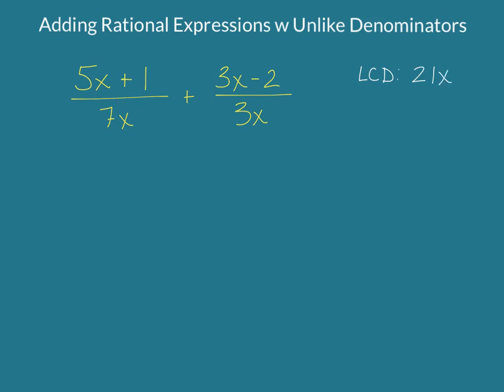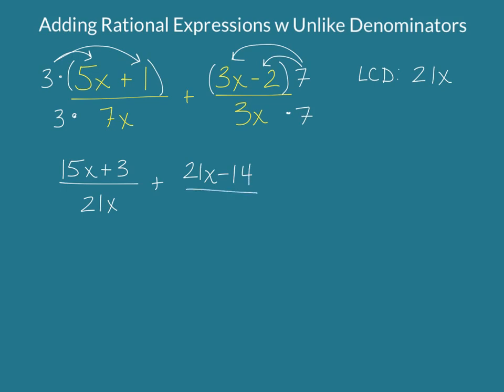And so we need to make both denominators 21x. So the way that we make this first one 21x is we multiply it by 3. And so we have to multiply this numerator by 3 as well. So I'm going to put that in parentheses. We're going to distribute the 3 through. Then in the second fraction, how do we get 3x to be 21x? We multiply it by 7. So what we do to the bottom, we must also do to the top. And I'm putting parentheses around them because they're binomials. They're more than one term. So if we distribute and get our new fraction, it'll end up being 15x plus 3 over 21x. And then this next fraction will end up being 21x minus 14, over 21x.